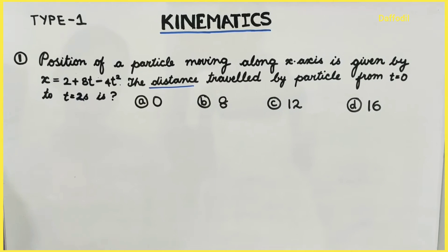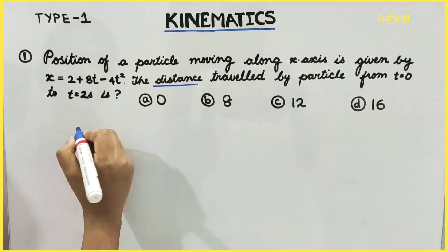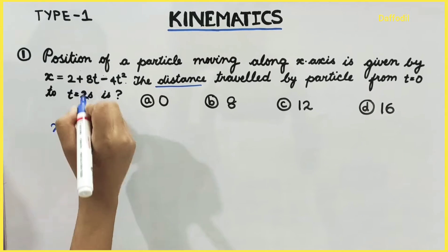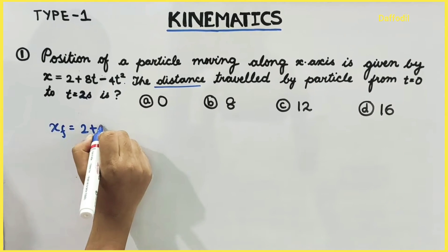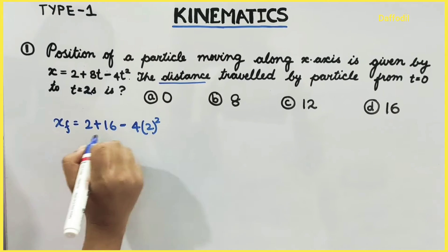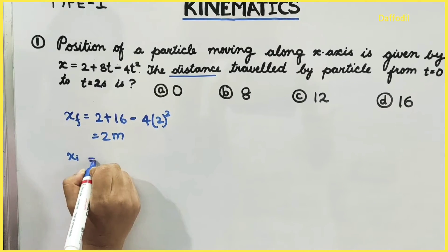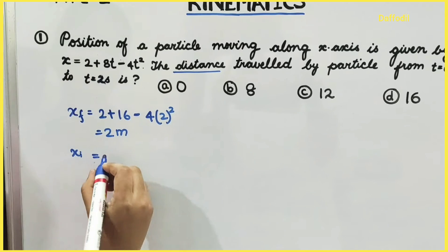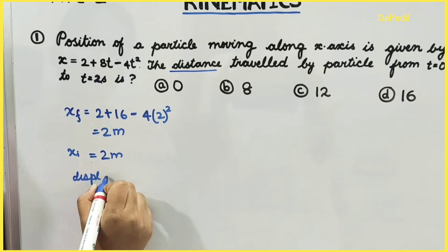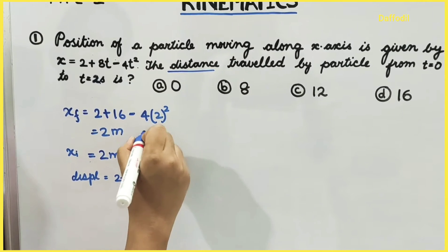Let's look at distance versus displacement. Many students confuse these. Substituting t = 2 seconds: x_final = 2 + 8(2) − 4(2²) = 2 + 16 − 16 = 2 meters. And x_initial at t = 0 is also 2 meters. So displacement = 2 − 2 = 0. Some students tick this option — but this is the wrong method.